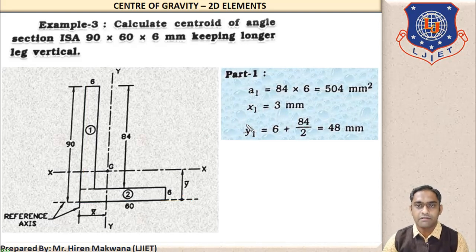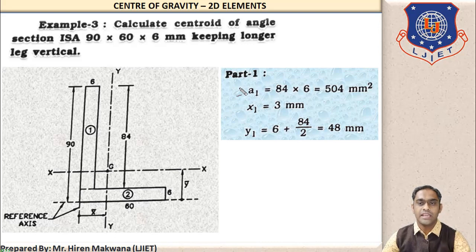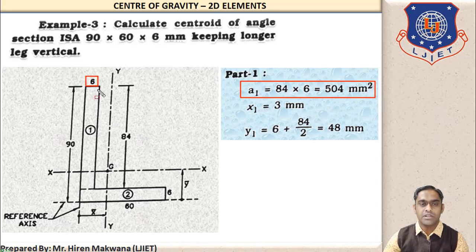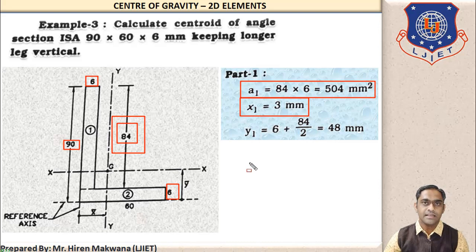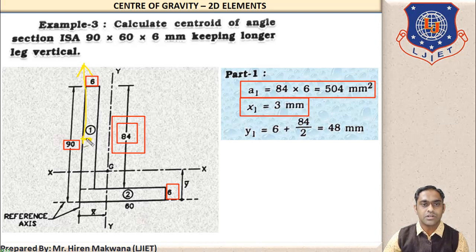For part 1 we have to find three values: area, x1, and y1. The area of part 1 has a horizontal dimension of 6 mm and vertical dimension of 84 mm (obtained by subtracting 6 from 90). So 84 × 6 gives area A1 = 504 mm². Next, x1 = 3 mm, because the CG of part 1 (a rectangle) is at its center, so the horizontal distance from the extreme left y-axis is 6/2 = 3 mm.